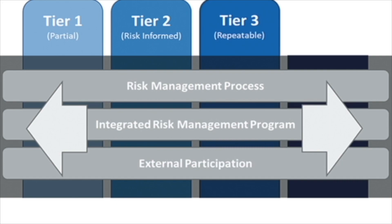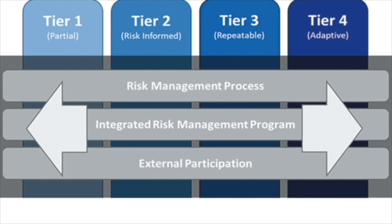Tier 3 is called repeatable. This applies to organizations whose risk management practices are approved and formally adopted as policy. There is an organization-wide approach to risk management, and the organization collaborates and receives information from parties about risk in quite a wide ecosystem. The final tier, Tier 4, is called adaptive — for organizations that adapt their cybersecurity practices from lessons learned in the past. Cybersecurity risk management uses risk-informed policies, procedures, and processes, and is a large part of organizational culture.